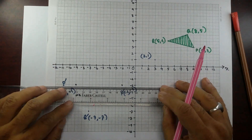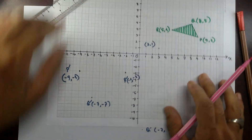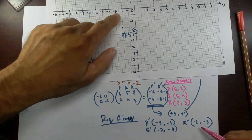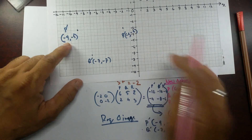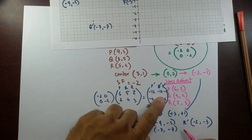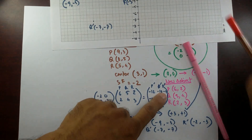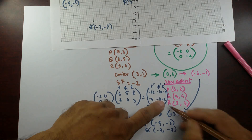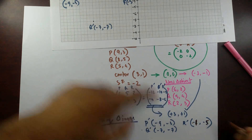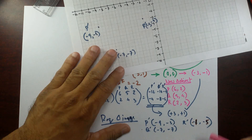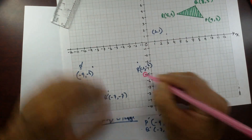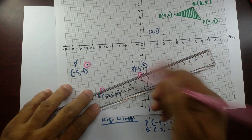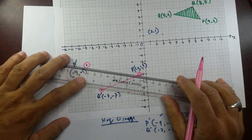I made a mistake — R' should be: −4+3 = −1 and −6+1 = −5, so R' is (−1, −5). Plotting these: P' is at (−9, −3), Q' is at (−7, −7), and R' is at (−1, −5). Joining these points gives the image triangle, which should look something like this.